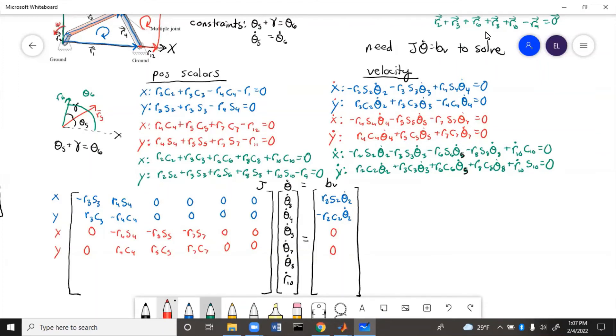So finally, we have the green loop. So here you can see that we have theta 6 and theta 5 stuff in the same column because they're both times theta 5 dot.